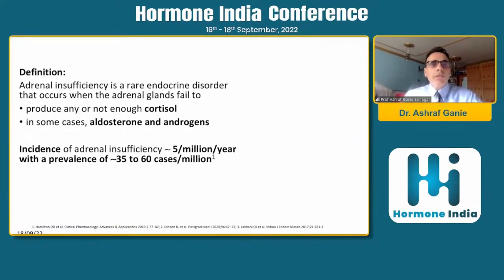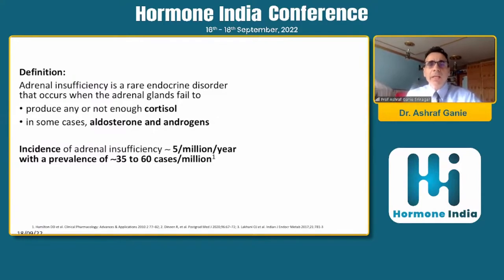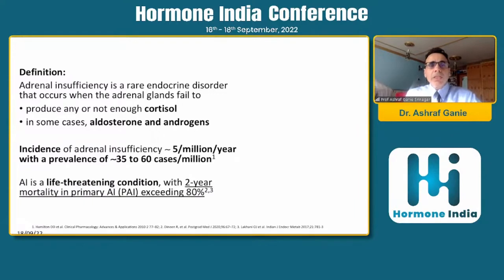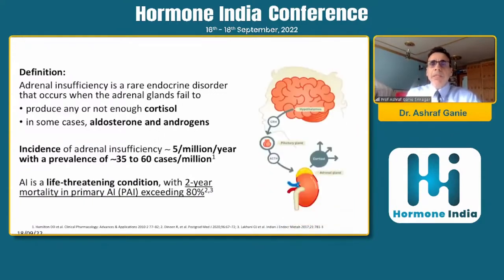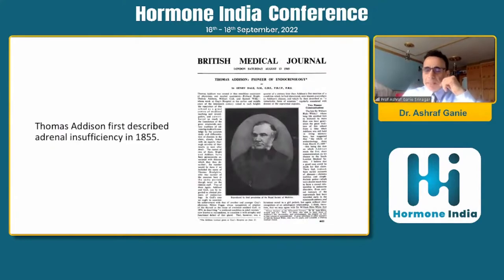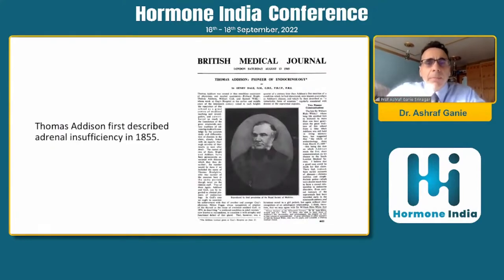Adrenal insufficiency is an endocrine disorder where the adrenal gland primarily fails, whether due to diseases in the adrenal glands themselves or outside in the hypothalamic-pituitary-adrenal axis. The disease is relatively rare, occurring in five per million per year, with a prevalence of 35 to 60 cases per million. It is life-threatening with a two-year mortality of more than 80%. Although autoimmune in origin in the West, in the Indian setting there may be some differences.